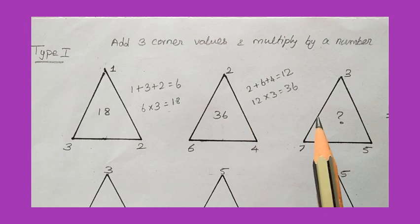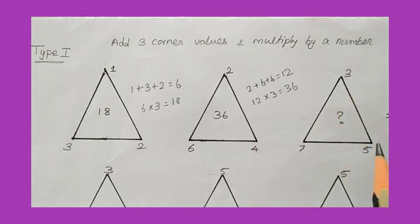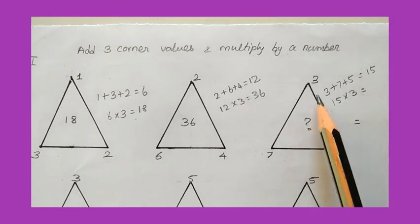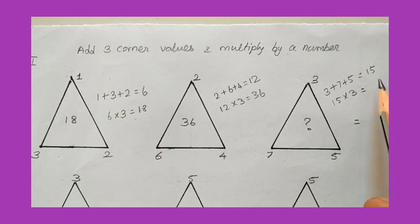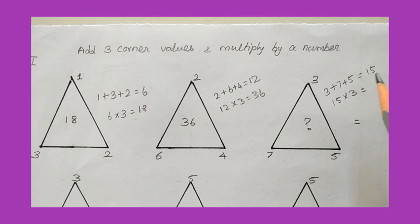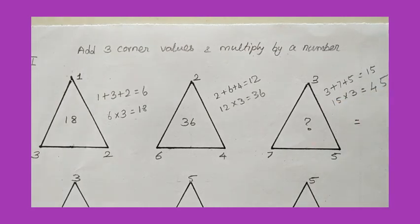Now I apply this to the third triangle. The corner values are 3, 7, and 5. Adding them: 3 plus 7 plus 5 gives 15. From the pattern in the previous two triangles, I multiply the sum by 3, giving 45 as the answer.